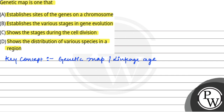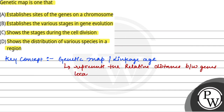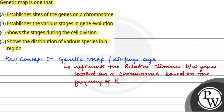A genetic map represents the relative distance between genes located on a chromosome, based on the frequency of recombination between them.